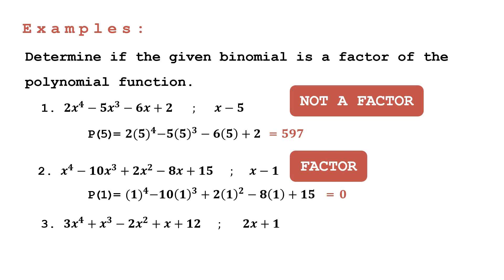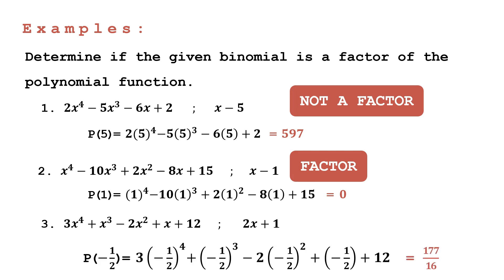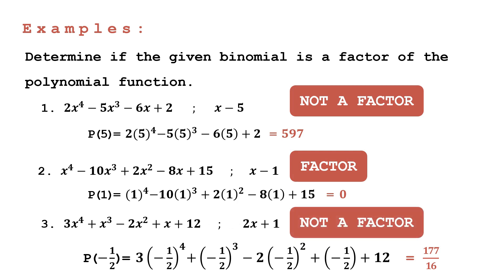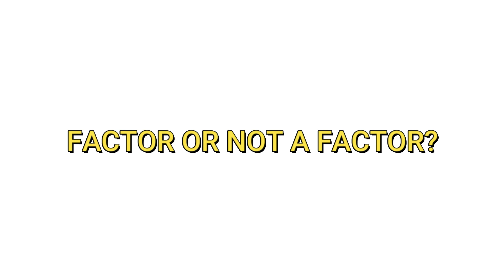For the third example, we have 3x⁴ plus x³ minus 2x² plus x plus 12 divided by 2x plus 1. The value of x is equal to negative one-half. Substituting negative one-half and simplifying, the remainder equals 177/16. Since the remainder is not equal to 0, 2x plus 1 is not a factor. To summarize: the remainder must equal 0 for the divisor to be a factor.